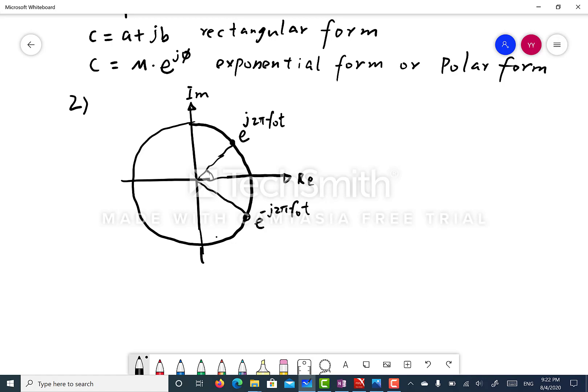Here, the angle theta 1 equals 2 pi f0 t, and the angle theta 2 equals minus 2 pi f0 t.